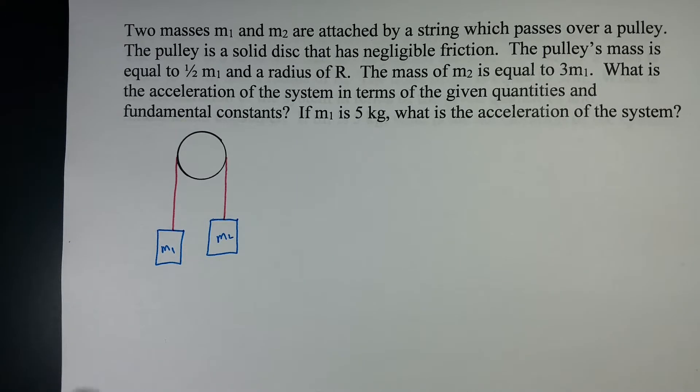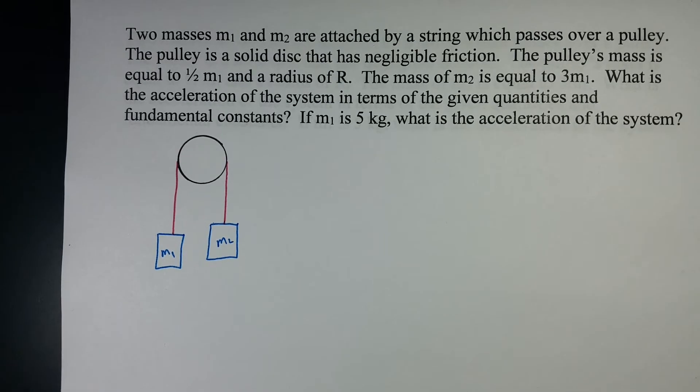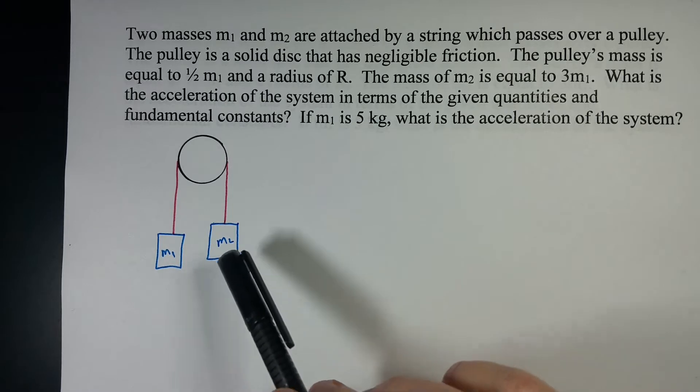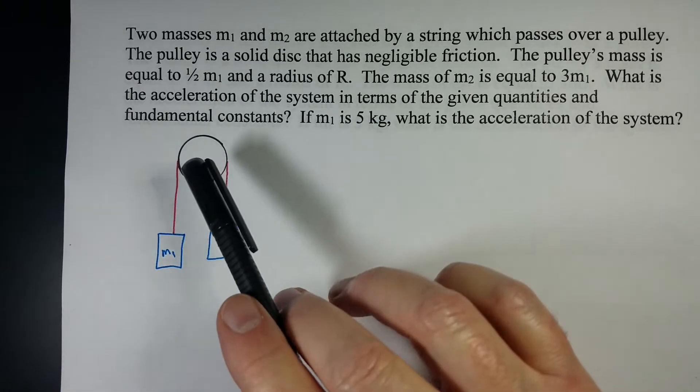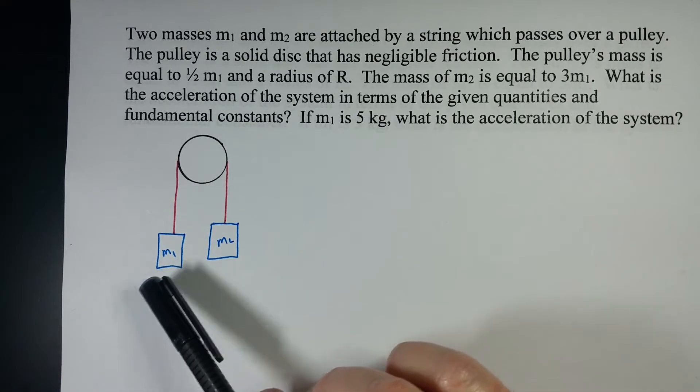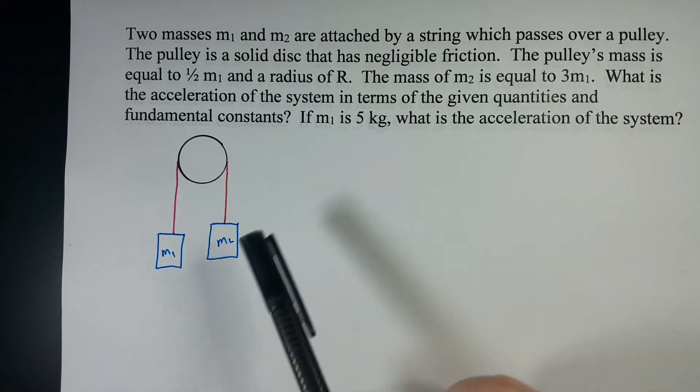Hi, this is Kayleigh, and let's talk about an Atwood machine where the mass of the pulley actually matters. We've got a pulley system here where M2 is three times the mass of M1, and the pulley is half the mass of M1. So everything's in terms of M1, and we're going to use that later.